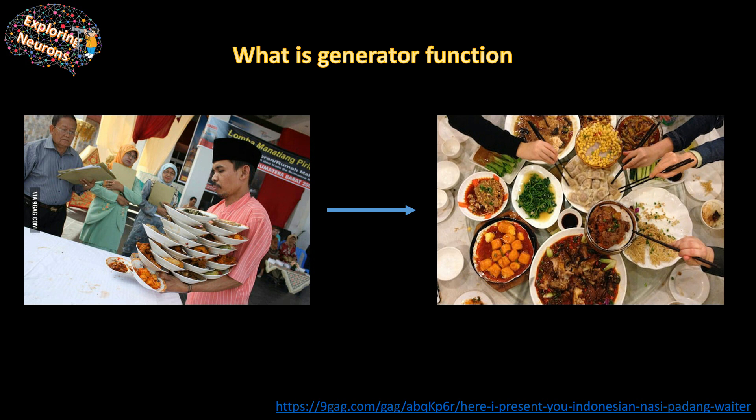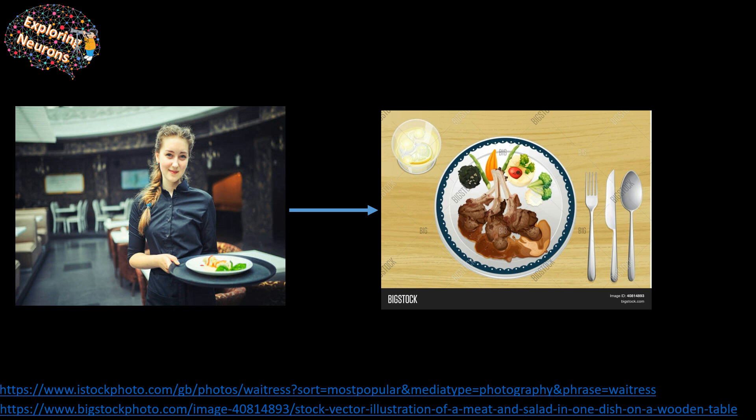This will obviously occupy a lot of space on your table and it will be very difficult to eat. What waiter A does is get your order all at once, fill up your space, and you're struggling to eat. Now take waiter B — you order the same things, but instead of bringing everything at once, she gives you your order one by one.